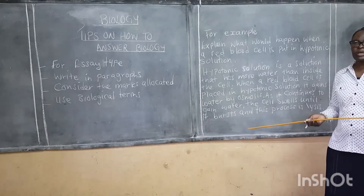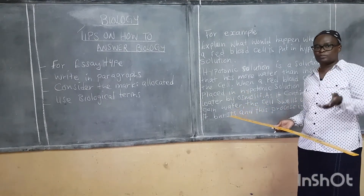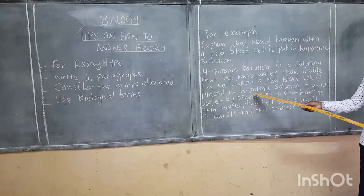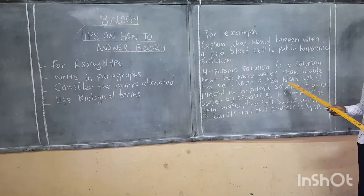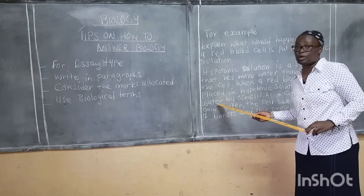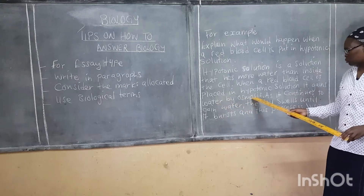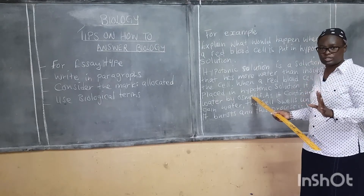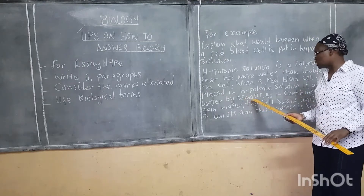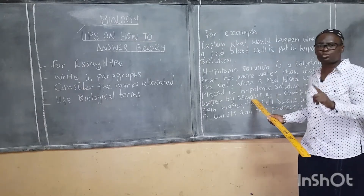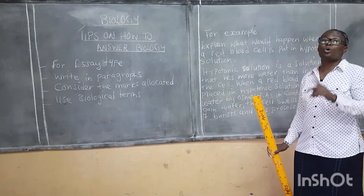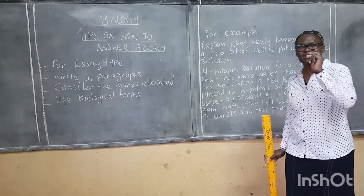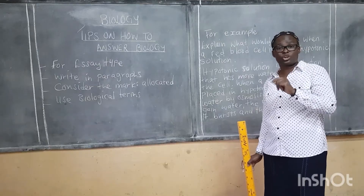We are being asked: what will happen if we put a red blood cell in hypotonic solution? When a red blood cell is placed in hypotonic solution, it gains water — by what process? By osmosis. If you just say it gains water, you have not used any biological term. But when you put osmosis, even the marker will be able to know that this student knows what she is talking about. That's why it is important to ensure that you use biological terms.